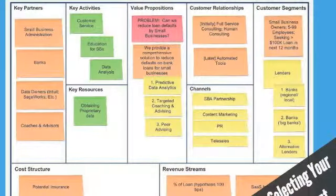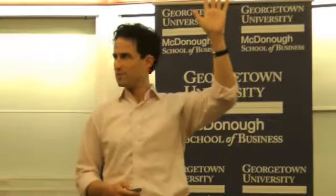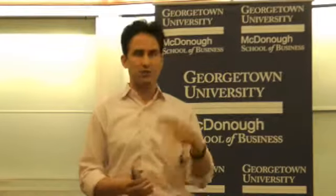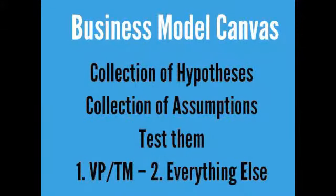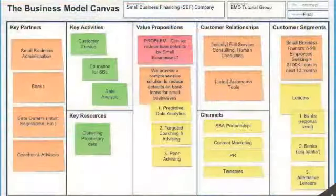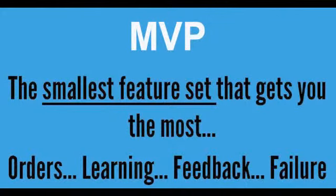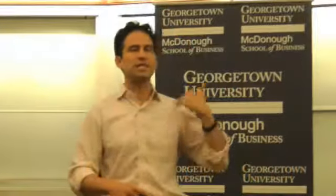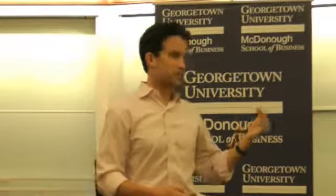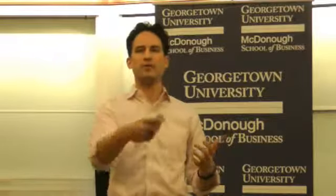Hopefully many of you have used a business model canvas — one of the best tools for putting your business model on a single page. I still use this even with venture-backed companies because it's a great way to think about your business all in one place. Once you've gotten confidence that the dogs will eat the dog food and you've gotten enough feedback to know there's something there, that's when you take it to the next level. A minimum viable product is the smallest feature set that gets you the most learnings, the most orders, the most insights — essentially something that helps you advance to the next level.